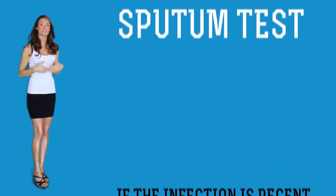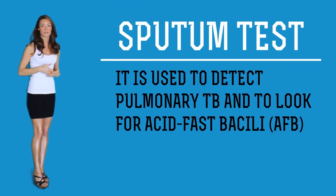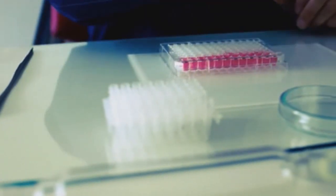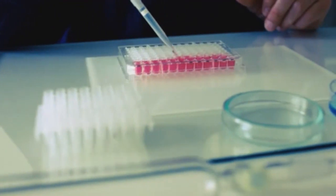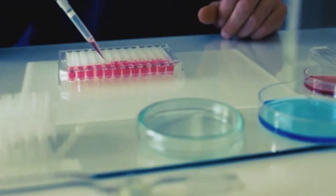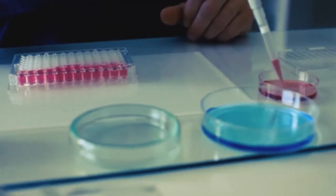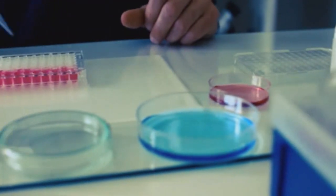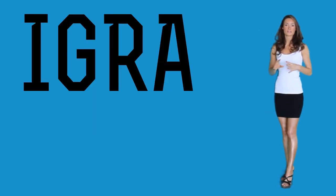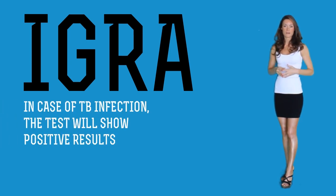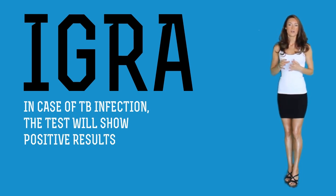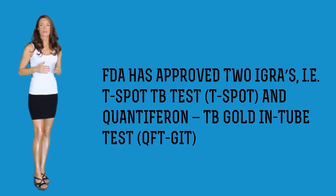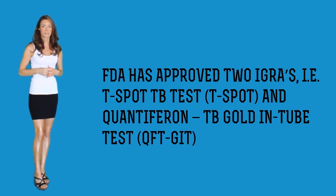Another test for discerning TB is the sputum test. It is used to detect pulmonary TB and to look for acid-fast bacilli or AFB. It is also important for checking resistant strains of TB bacteria, which is helpful in determining the antibacterial drugs to use, but it needs about four to eight weeks to complete. IGRA — interferon gamma release assay — can be used in just a single visit. If the patient has a TB infection, the test can show a positive result. IGRA determines the reaction of the immune system to the TB bacteria. The FDA has approved two IGRAs: the T-SPOT TB test and the QuantiFERON-TB Gold in-tube test.